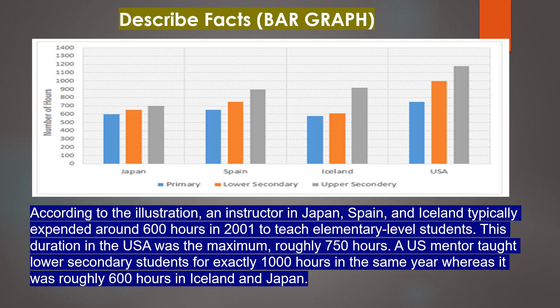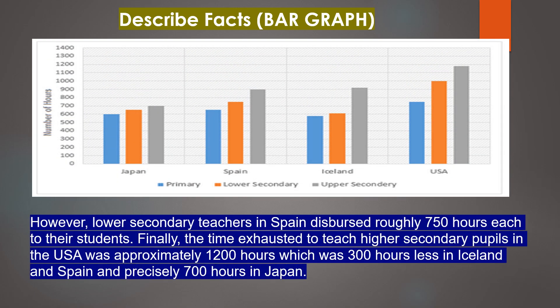According to the illustration, an instructor in Japan, Spain and Iceland typically expended around 600 hours in 2001 to teach elementary level students. This duration in the USA was the maximum, roughly 750 hours. A US mentor taught lower secondary students for exactly 1000 hours in the same year, whereas it was roughly 600 hours in Iceland and Japan. However, lower secondary teachers in Spain dispersed roughly 750 hours each to their students.